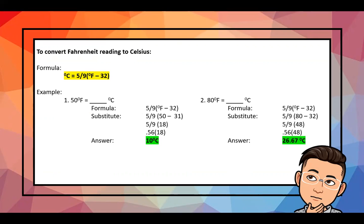The second example: convert 80°F to Celsius. Using the formula (5/9) × (80 − 32): 5/9 equals 0.56, and 80 minus 32 is 48. So 0.56 × 48 gives a final answer of 26.67 degrees Celsius. That is how to convert Fahrenheit readings to Celsius.